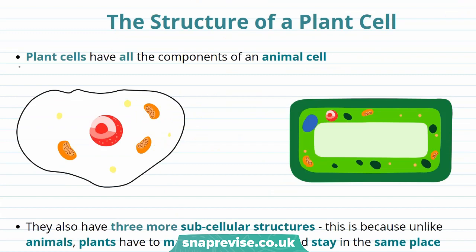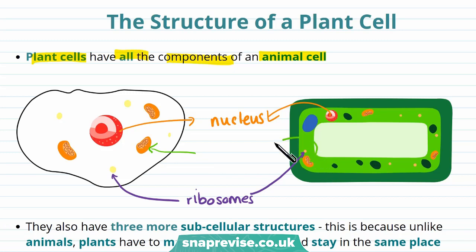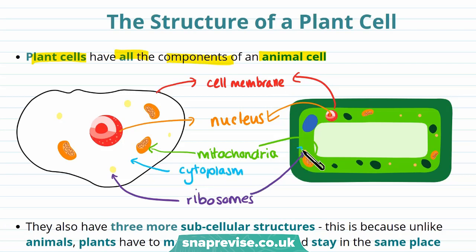Plant cells are actually fairly similar to animal cells — they have all the components of an animal cell. For example, they both have a nucleus where genetic information is stored, ribosomes where protein synthesis happens, mitochondria as a site of aerobic respiration which transfers energy to the cell, a cell membrane that controls the entry and exit of substances, and cytoplasm as a site of most chemical reactions.